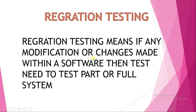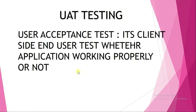Next is regression testing. If any modification or changes are made within a software, the tester needs to test either a part of the application or module, or the full system. After the developer modifies or changes any code in the software, the tester needs to re-test those areas. This is called regression testing.